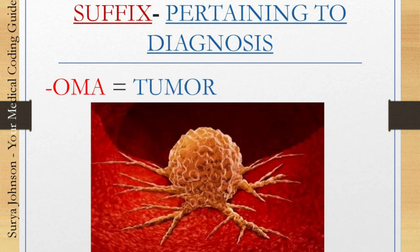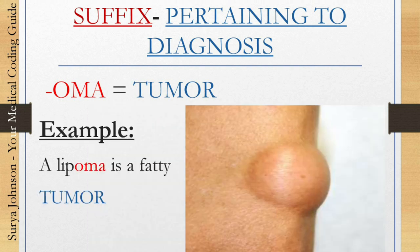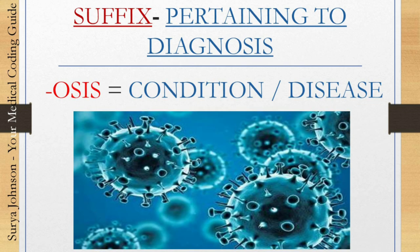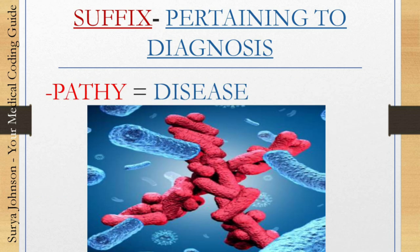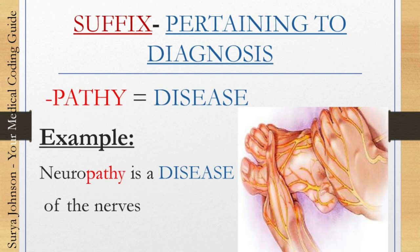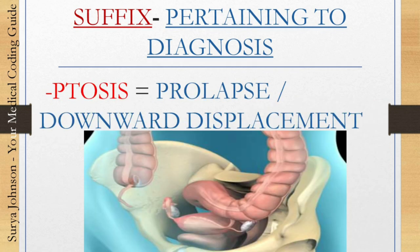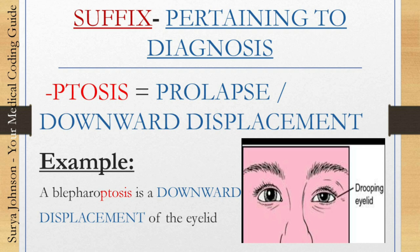The next one, '-oma,' means tumor. For example, a lipoma is a fatty tumor. The next one, '-osis,' means condition or disease. For example, dermatophytosis is a fungal disease of the skin. The next one, '-pathy,' also means disease. For example, neuropathy is a disease of the nerves. The next one, '-ptosis,' means prolapse or downward displacement. For example, blepharoptosis means downward displacement of the eyelid.